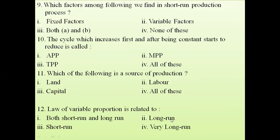Question 9: which factors do we find in the short-run production process — fixed factors, variable factors, or both? In the short run we have both fixed and variable factors, but in the long run we have only variable factors, because in the long run anything can be changed. In the short run, some inputs cannot be varied and some are always varied, so both exist.